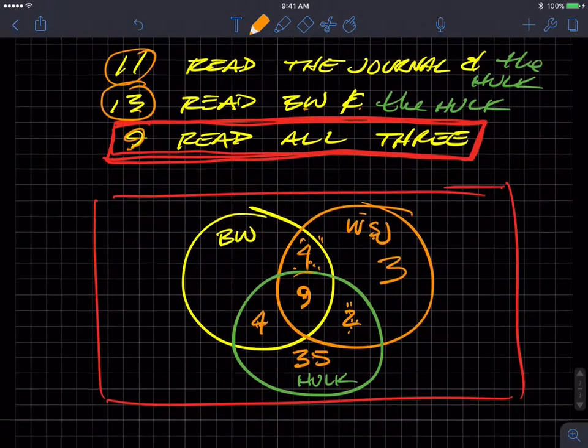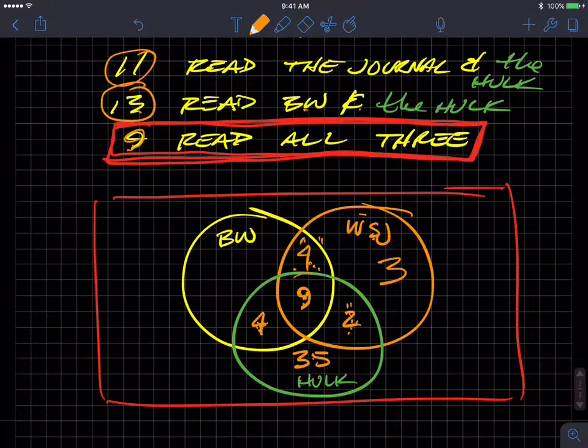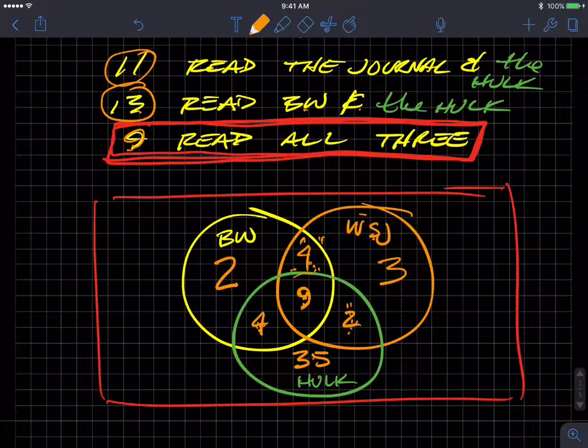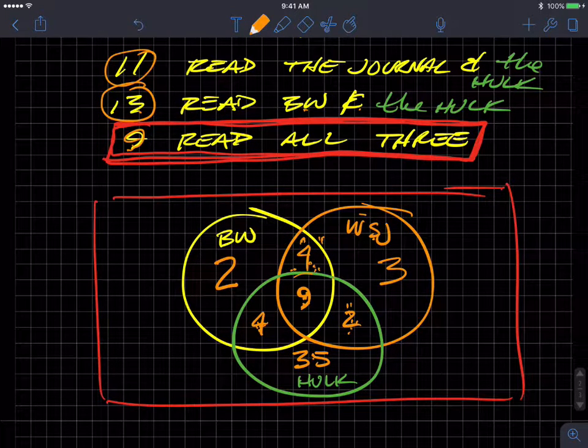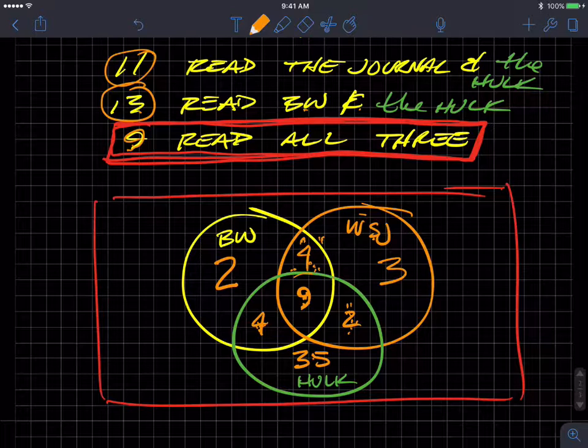And then 19 students read Business Week. So 9 plus 4 is 13, 14, 15, 16, 17, 18, 19. An additional 2, or 2 in addition to this 9, 4, and 4 will give us a total of 18 for Business Week in the yellow circle.